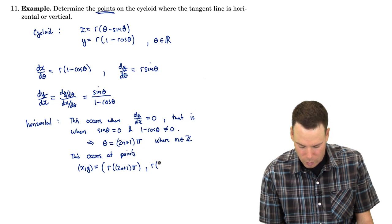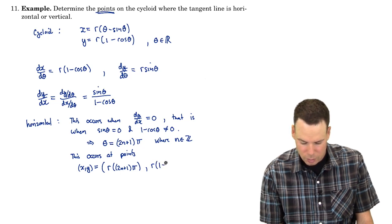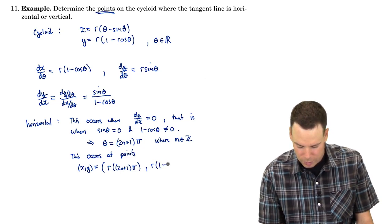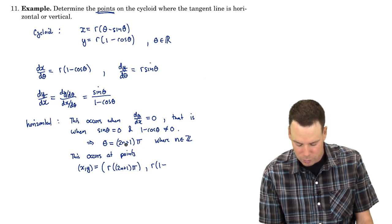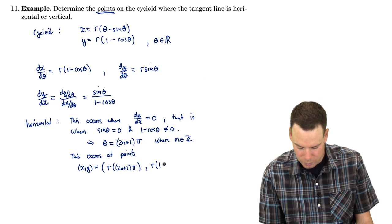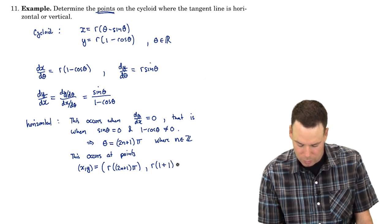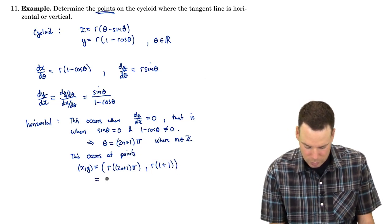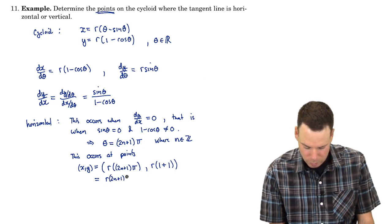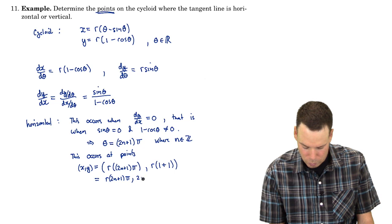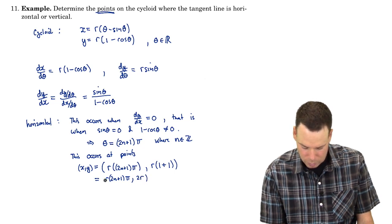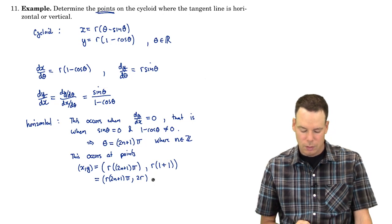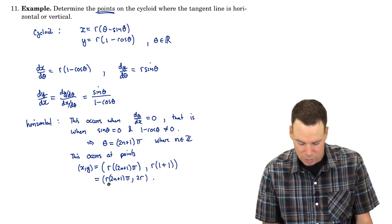And r times 1 minus cos of theta. Oh, but cos of theta when theta is an odd multiple of pi, cos of theta is negative 1. So this turns out to be r of 1 plus 1, or in other words it's r times 2n plus 1 pi and 2 times r. So there are the points for which the tangent line is horizontal.